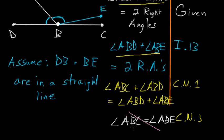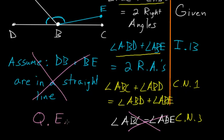So this must be wrong, which leads us to conclude that our original assumption that DB and BE were in a straight line has to be wrong as well. Since this assumption is wrong, we know that the line DB must be in a straight line with the line BC, and that ends our proof. QED.